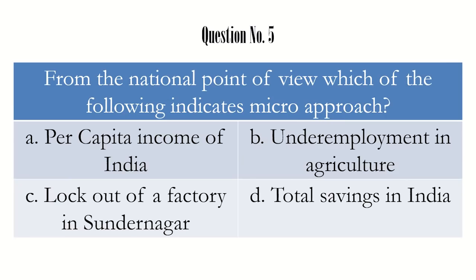Question number 5: from the national point of view, which of the following indicates the micro approach? We know that the scope of economics has two parts: microeconomics and macroeconomics. In microeconomics, we deal with economics related to individuals, households, and firms. In macroeconomics, we talk about factors associated with the country such as employment, inflation, total output, exports, and imports.